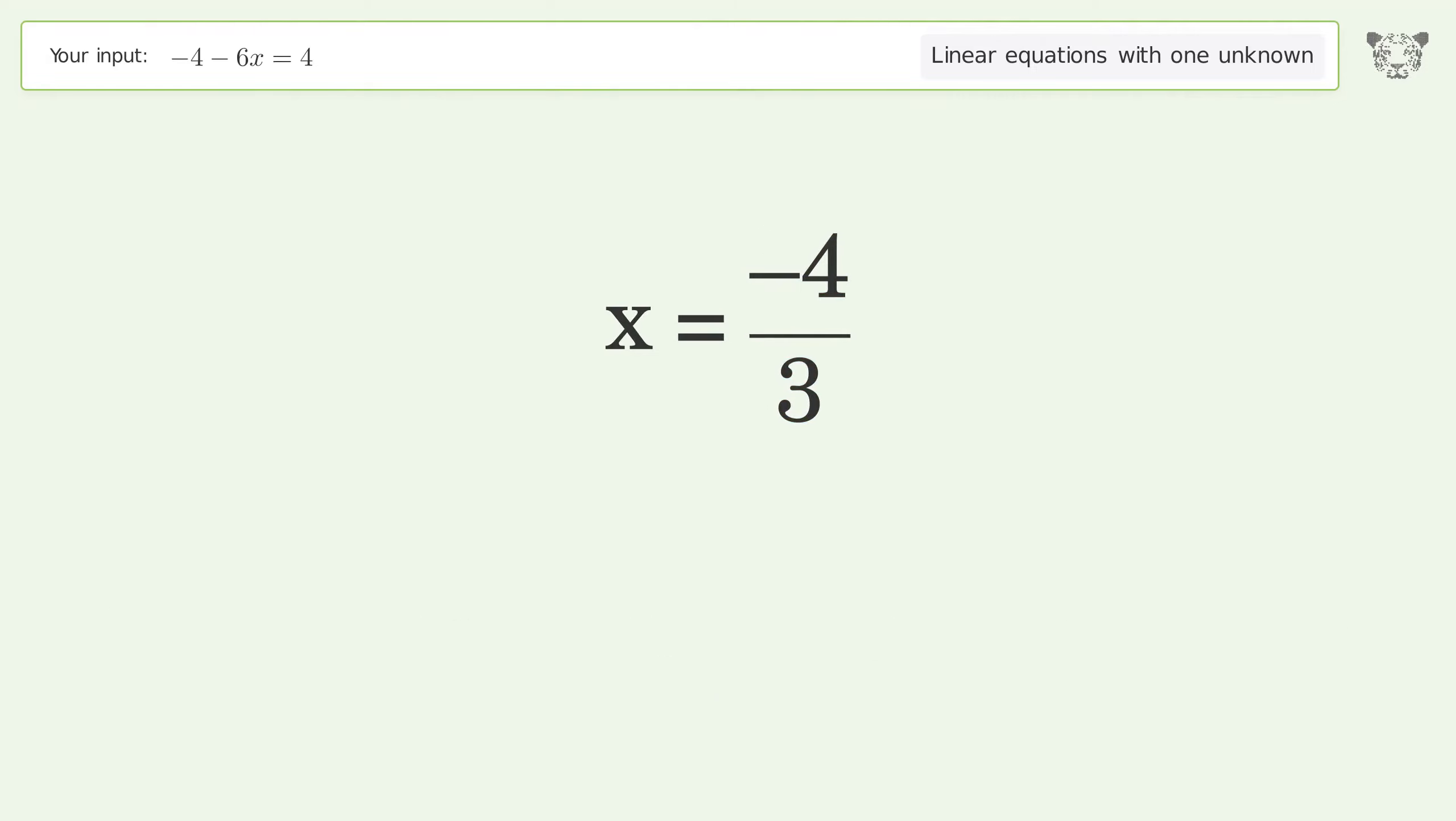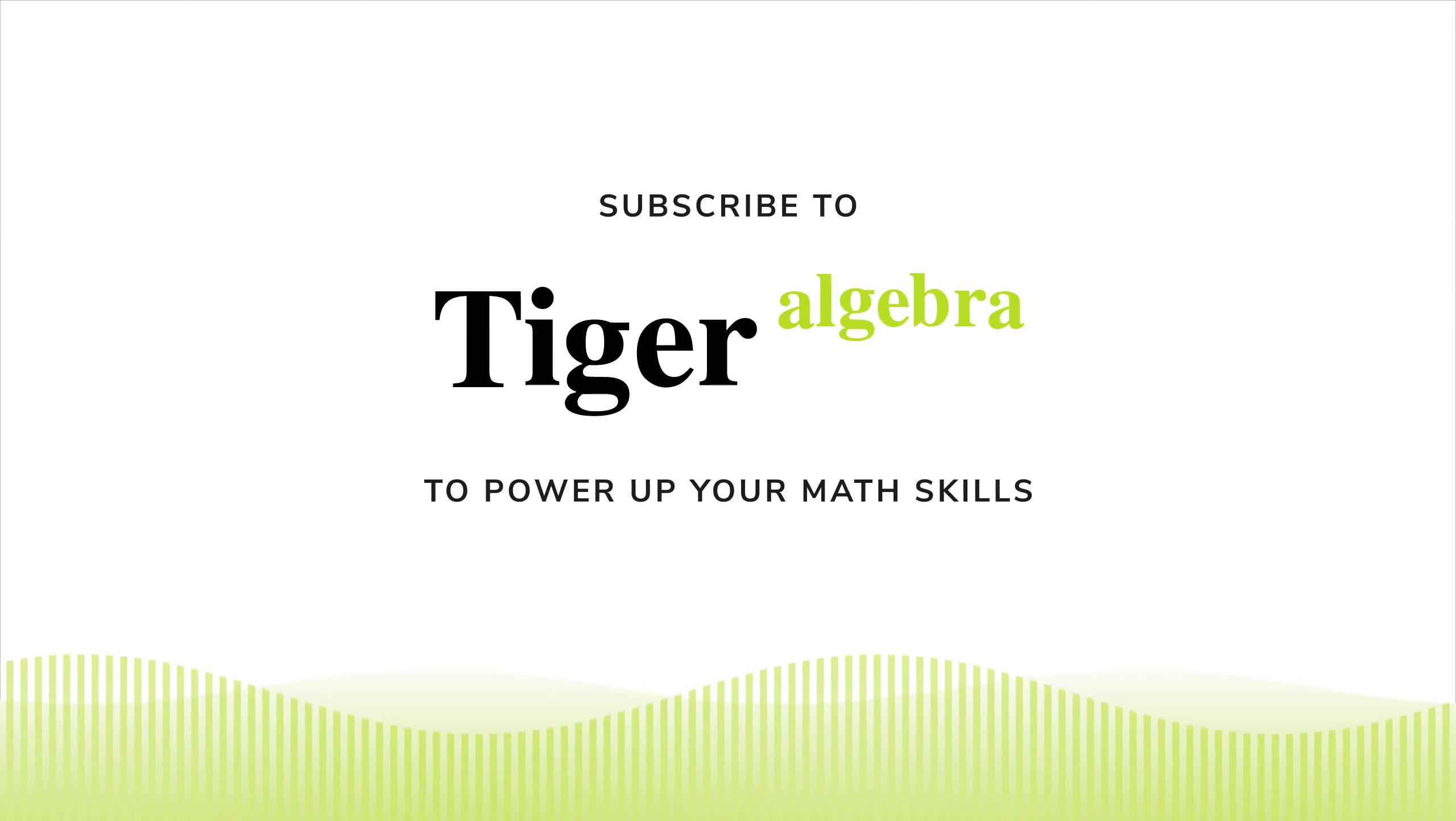So the final result is x equals negative 4 over 3.